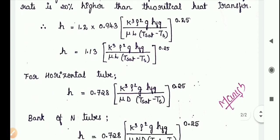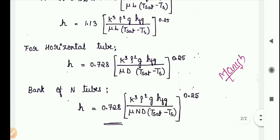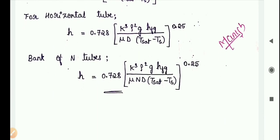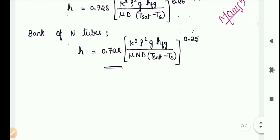For a horizontal tube, h = 0.728 × [k³ × ρ² × g × hfg / (μ × n × D × (Tsat − Ts))]^0.25, and for a bank of n tubes, h = 0.728 × [k³ × ρ² × g × hfg / (μ × n × D × (Tsat − Ts))]^0.25. This concludes the derivation of laminar film condensation on a vertical plate — the Nusselt theory.